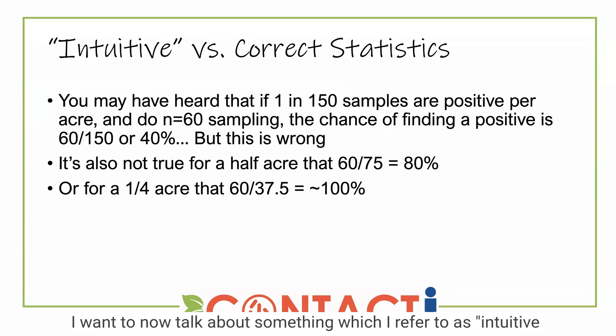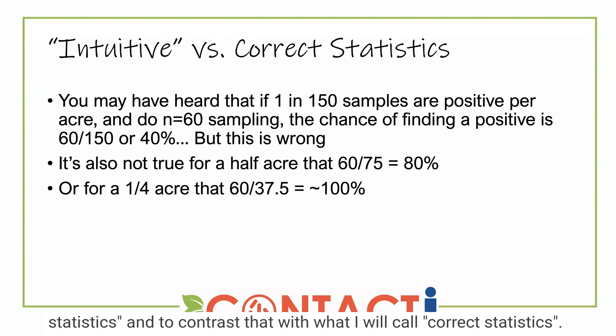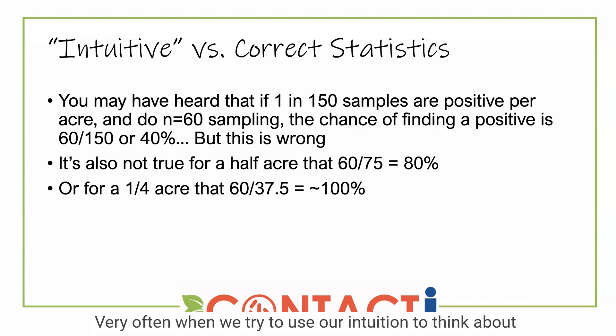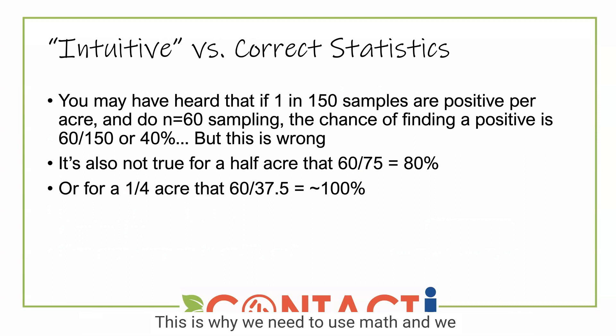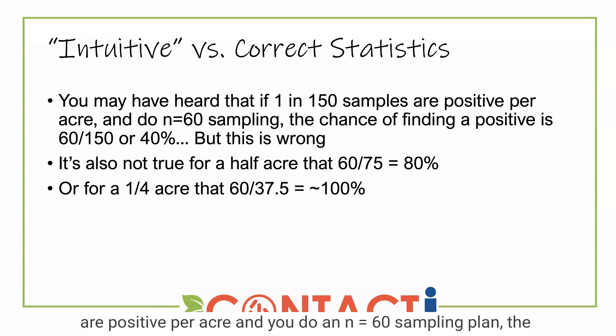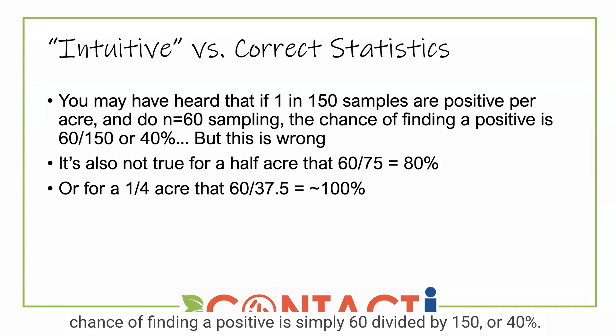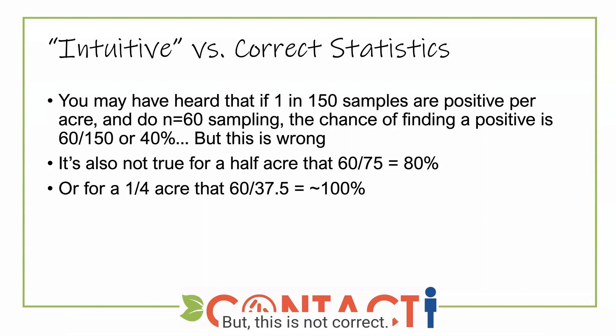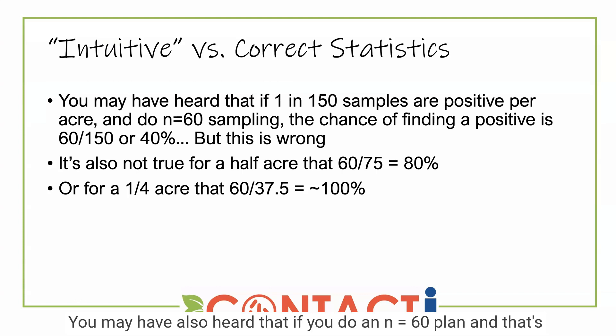I want to now talk about something which I refer to as intuitive statistics and contrast that with what I will call correct statistics. Very often, when we try to use our intuition to think about probability and statistics, our intuition actually lets us down. This is why we need to use math and proper statistical approaches. For example, you may have heard that if one in 150 samples are positive per acre and you do an N equals 60 sampling plan, the chance of finding a positive is simply 60 divided by 150, or 40 percent. But this is not correct.